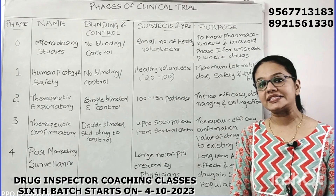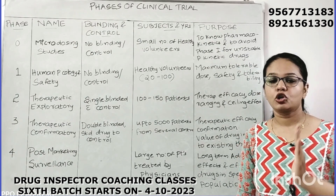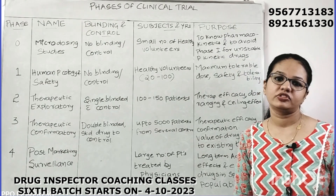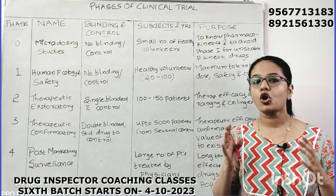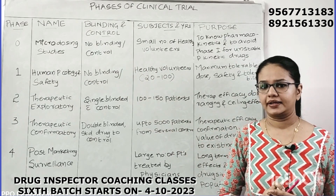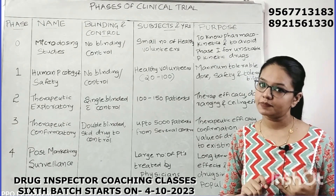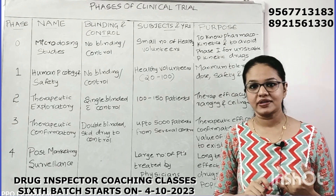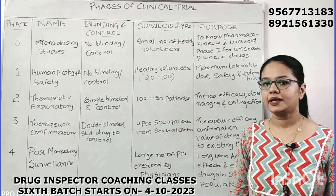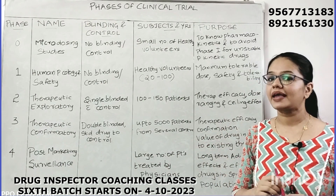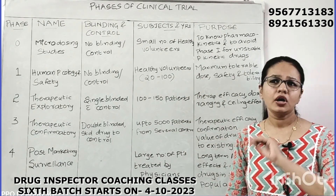Phase 1 is the human pharmacology and safety stage. Here we will study how safe the drug is in human beings, find out the toxicity profile of the drug, and identify common adverse events associated with the drug. This is an open label study — there is no blinding or control group — and it is carried out in healthy volunteers, not disease patients.